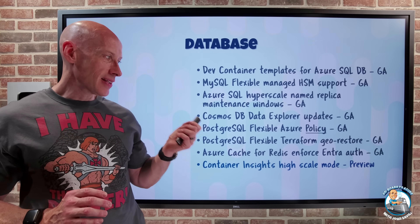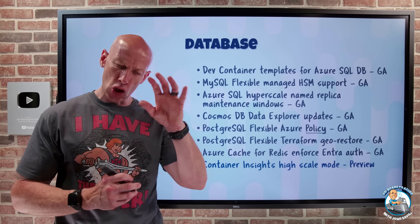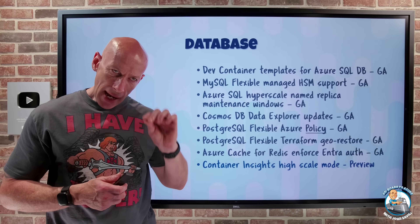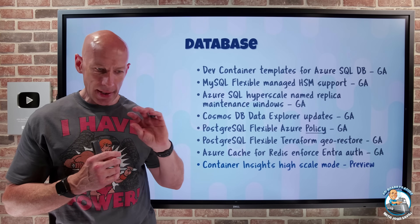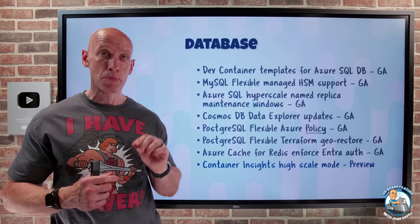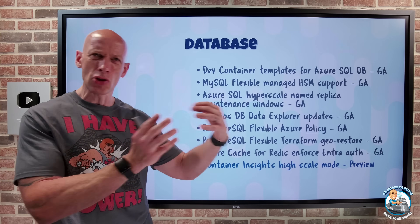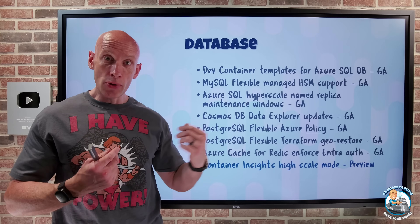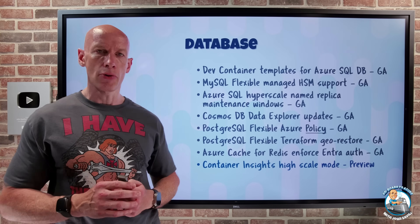Container Insights now has a high-scale mode in preview. Container Insights provides a curated set of metrics and logs around my AKS environment. High-scale mode enables collection of container console output — standard out and standard error — at up to 50,000 logs per second per node when high throughput is turned on. There are some changes made behind the scenes including a config map change. Note that AKS nodes need to be more powerful — 16 CPU cores is the recommended minimum to turn this on.